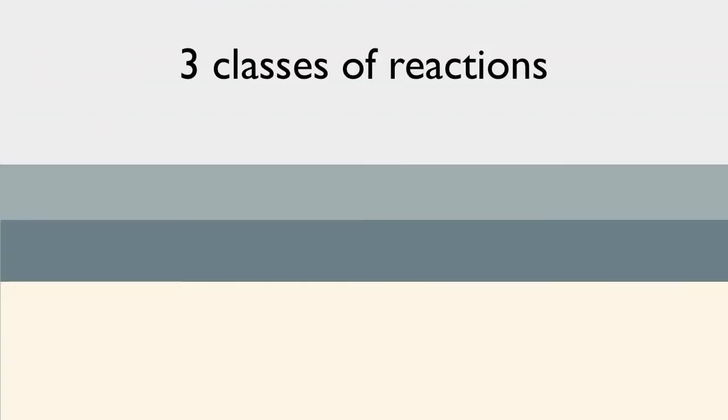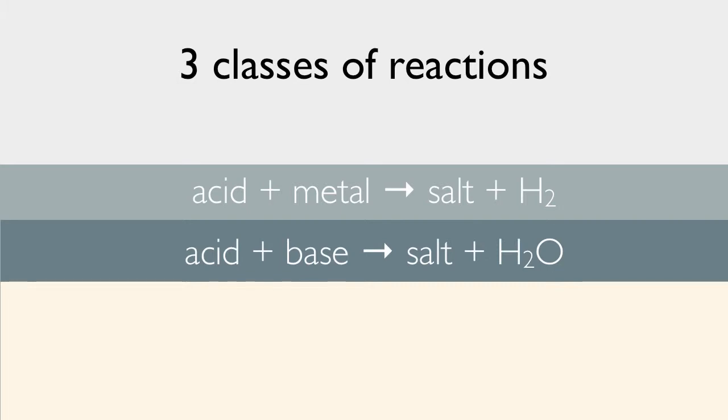We're going to talk about three classes of reactions. Acid and a metal make salt and hydrogen gas. Acid and a base make salt and water. An acid and a carbonate make salt, water, and carbon dioxide.